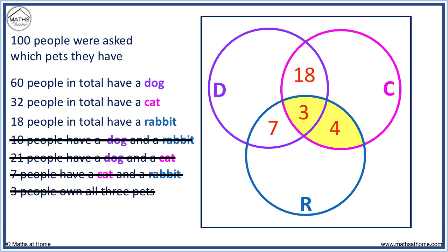Now we look at the totals in each individual circle. 60 people own a dog. We have 7 plus 3 equals 10, plus 18 equals 28. We need another 32 to make a total of 60 in this circle.